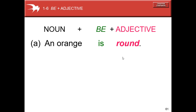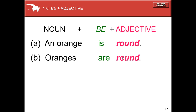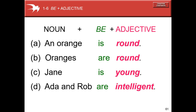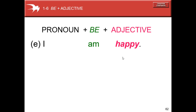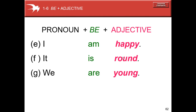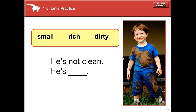Now, be plus an adjective: an orange is round, oranges are round. You see the adjective stays the same in singular and plural. Jane is young. Kate and Rob are intelligent. I am happy, it is round, we are young.